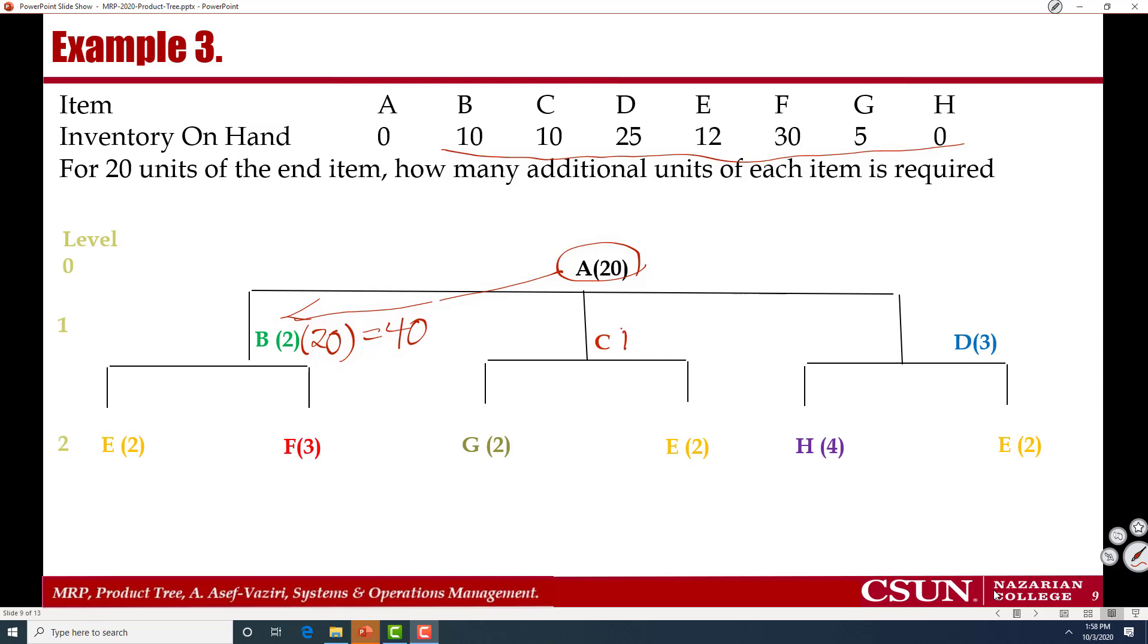Therefore, for 20A, I need 20C. But I do have 10 inventory. And that makes it 10. For B also, I have 10 units of inventory. So I subtract it and make it 30. Now we go to D.